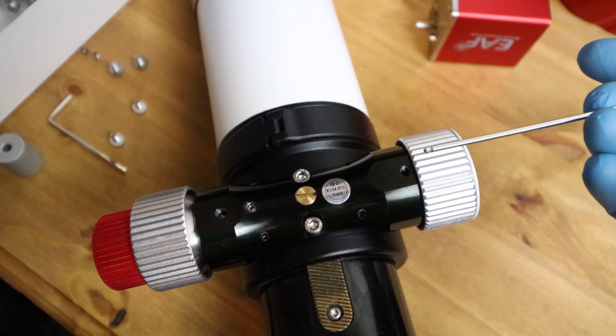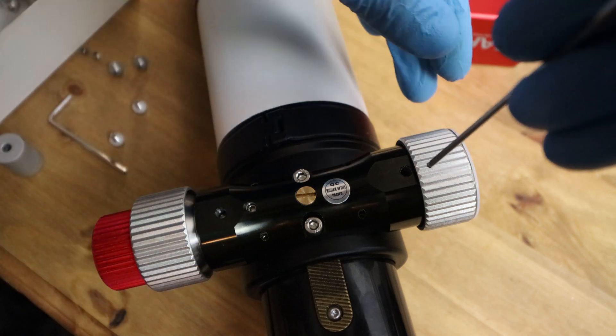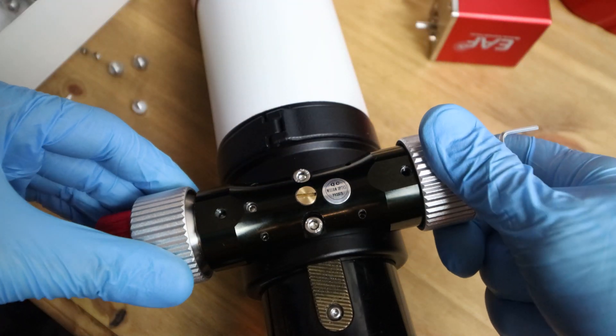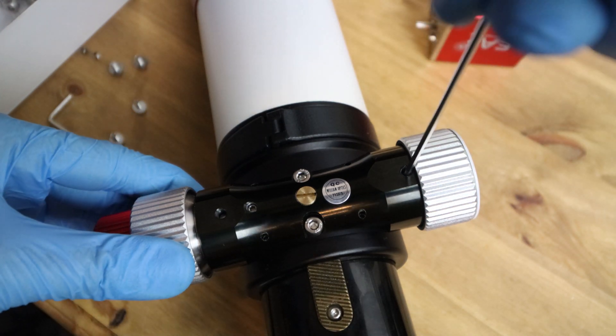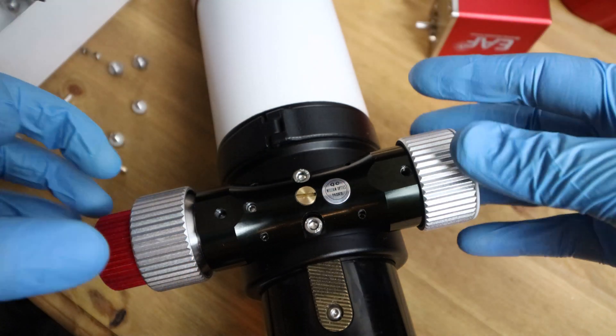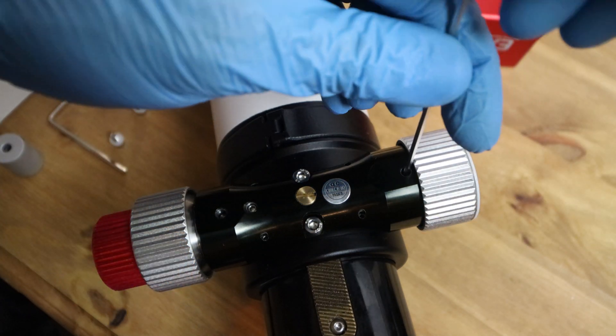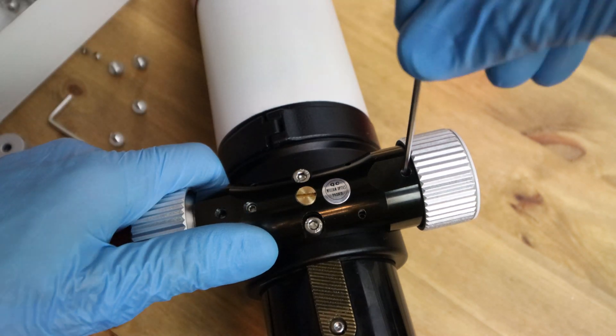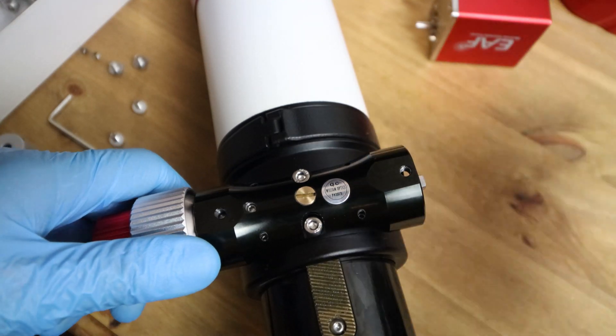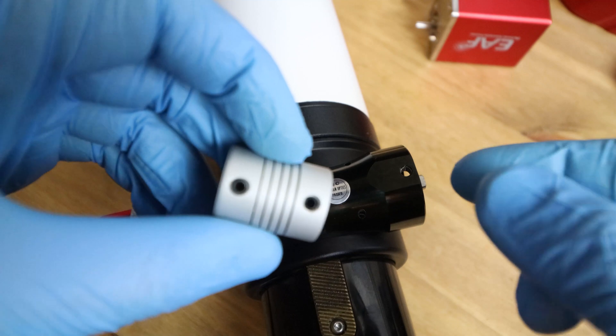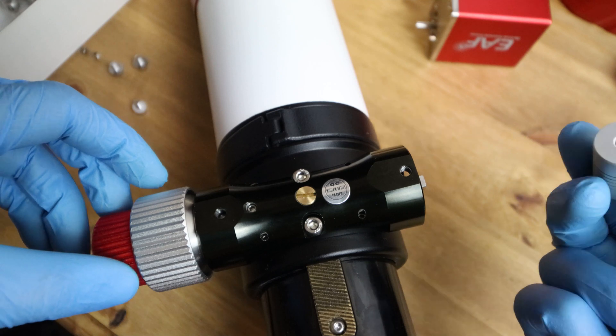First thing to first, we're going to get this focus wheel off, not the one with the fine tune on. The way to do that, it's secured on with two grub screws and all you do is just turn the wheel until you locate the grub screws. Just undo that. There's one, and then you don't have to do them all the way out, just turn the wheel until you find the other one and do the same. Nip that and probably see it's just wiggled off there.